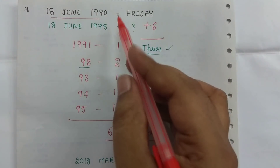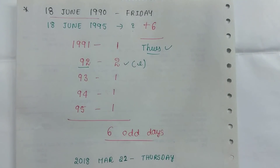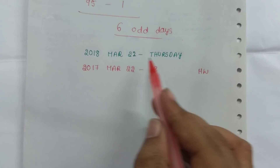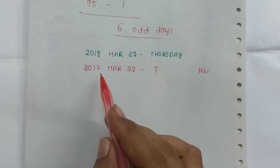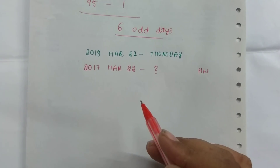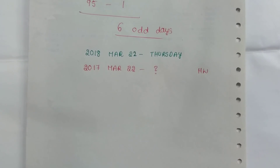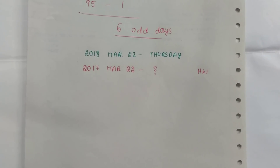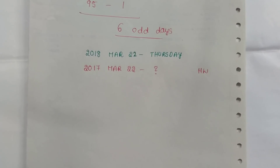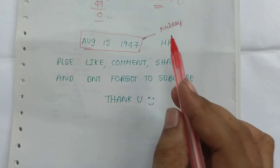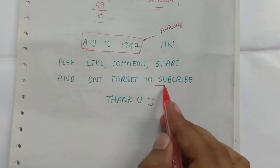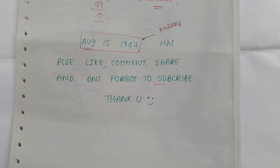Okay, if you have any questions or problems, you will have any questions. Okay, if you have a homework that's on 2018, March 22 — Thursday. So last week's homework answer is Friday. If you like and share the video, please like and share the video and subscribe to our channel. Don't forget to subscribe and share. Thank you.